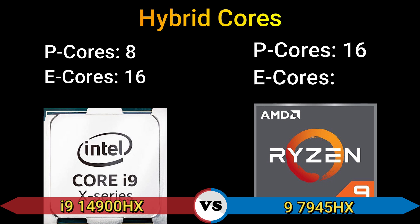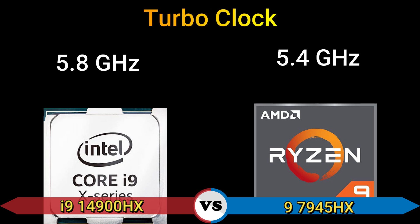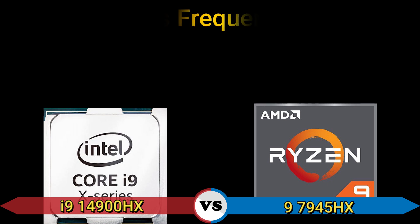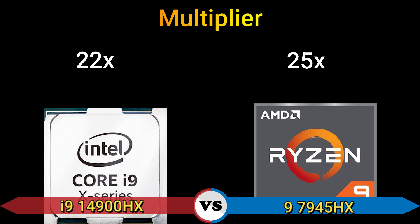Hybrid cores — Performance cores: 8, Efficient cores: 16; and Performance cores: 16, no Efficient cores. Turbo clock: 5.8 GHz and 5.4 GHz. Base frequency: 100 MHz. Multiplier: 22x and 25x.